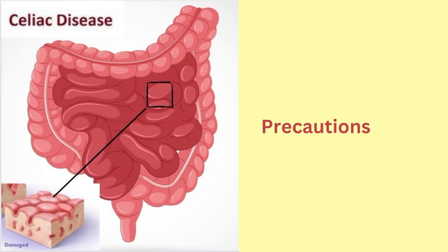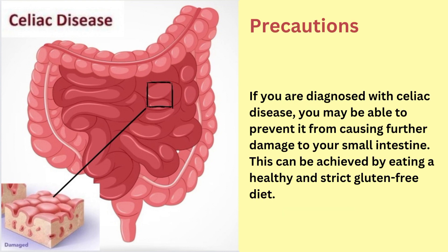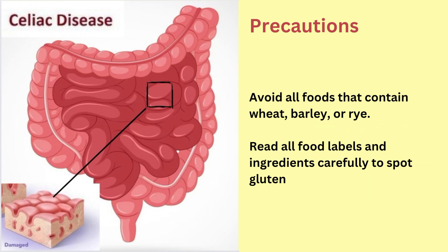Now let us discuss about the precautions. If you are diagnosed with celiac disease, you may be able to prevent it from causing further damage to your small intestine. This can be achieved by eating a healthy and strict gluten-free diet. Avoid all foods that contain wheat, barley, or rye.